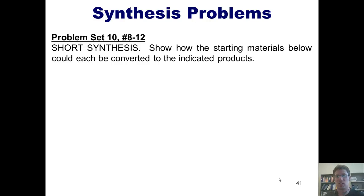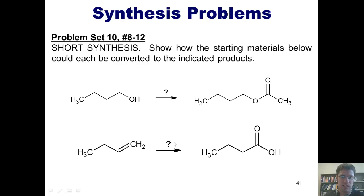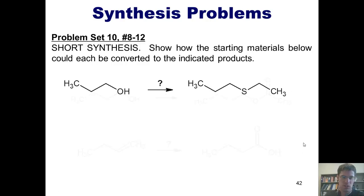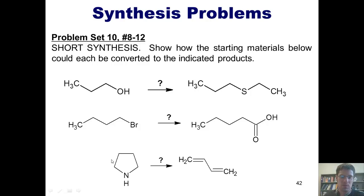I want to finish by showing you some synthesis problems. For students who are taking this from me, we will work as many of these out as you'd like to together in class. I, of course, encourage you to attempt them all on your own before coming to class. Here is the question. Show how the starting materials below could each be converted to the indicated products. Here is one, a primary alcohol being converted to this molecule called an ester. Separately, I have an alkene being converted to this carboxylic acid. Additionally, I have this primary alcohol being converted to this sulfide. And here, I've got this primary bromide being converted to this carboxylic acid. And lastly, I've got this molecule, which is a cyclic amine, being converted into this unusual diene.